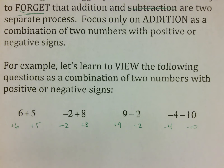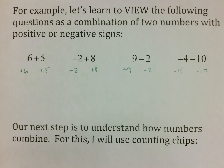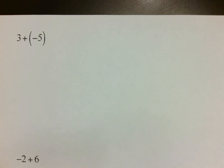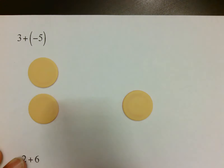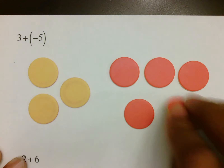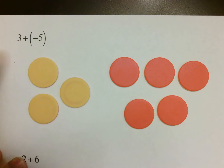Our next step is to understand how numbers combine, so I will be using counting chips to illustrate it. If at any point this doesn't make sense, please bring your work up to me. The first thing I want to model is 3 plus negative 5. Yellow chips typically mean positive — that represents 3 positives. Then I'm going to put 5 red chips for the negatives, because that's how negative 5 is shown. So you've got 3 positives and 5 negatives, and the plus sign just means put these two things together.